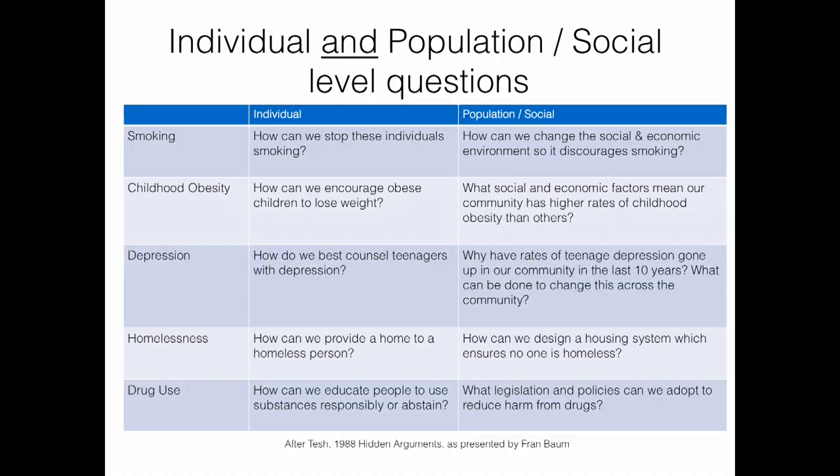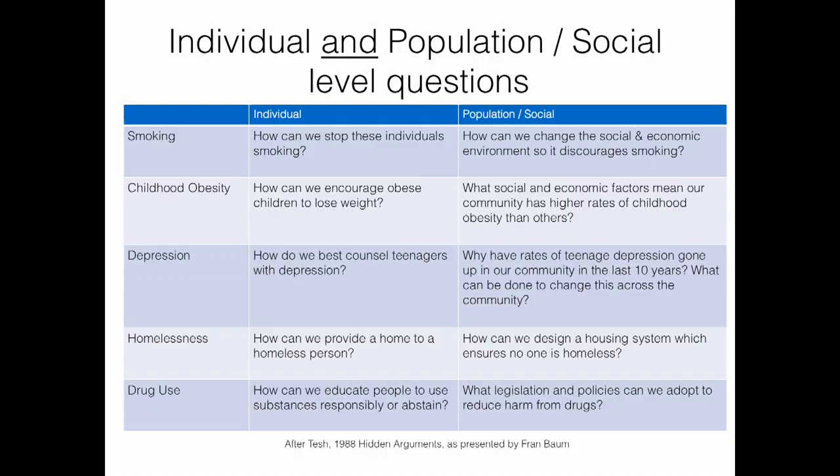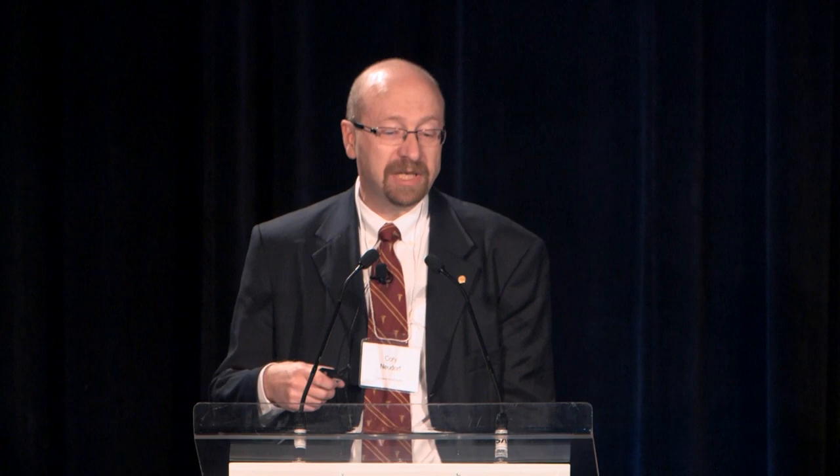Drawing on a paper by Fran Baum, if you look at the same problem from an individual level versus a population level, entirely different questions get asked — and it's not that one is right and one is wrong. In balance, we need to consider both: how are we preventing smoking at an individual level, but also changing the social and economic environment to discourage smoking? For depression, how do we best counsel individuals, but also ask why teens in a certain area have increasing rates of depression and suicidal tendencies, and what can be done at a community level? Both types of questions need to be discussed as a health system.